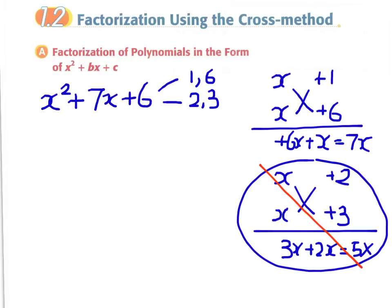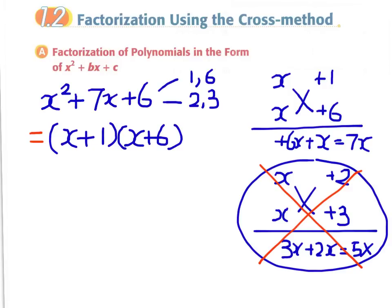The answer is x plus 1 times x plus 6. Since there is crossover multiplication and summation in the factorization process, we call this method the Cross method.